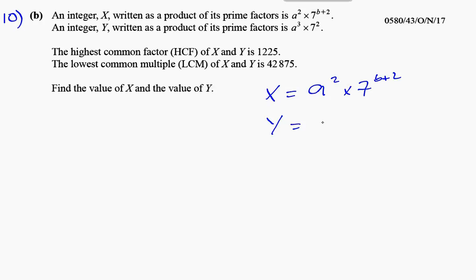They tell us the highest common factor of X and Y is 1,225. So let's work out the factors which are the same on top of each other. For X, you're going to have a² times 7^(b+2). And for Y, you're going to have a³ times 7².